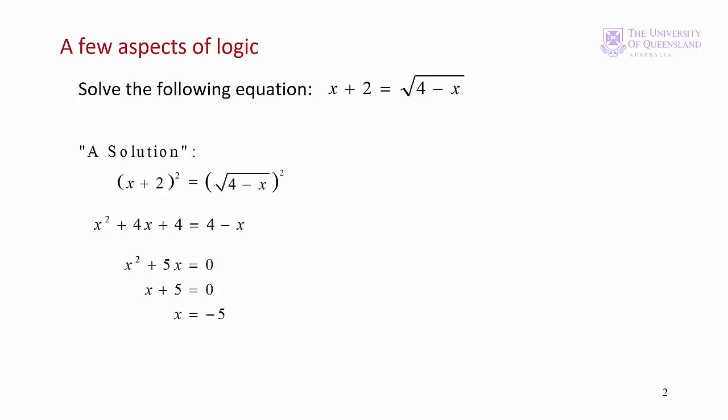Why not divide through by x? This gives us x plus 5 equals 0, and then we have x is equal to minus 5.